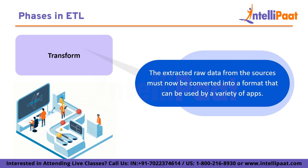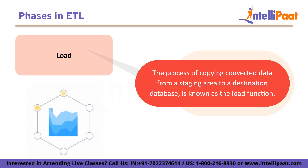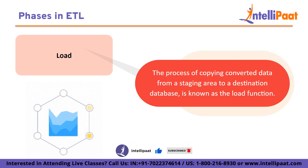Second is Transform. The extracted raw data from the sources must now be converted into a format that can be used by a variety of apps. This phase's objective is to prepare the data for practical use by cleaning, mapping and transforming it. It entails a variety of transformations that ensure the accuracy and security of the data. Normally, data is put into a staging database first and then loaded into the target data source. You can simply roll back if something does not go as planned. You can make audit reports for legal compliance here, or examine and resolve any data problems. Third is Load. The process of copying converted data from a staging area to a destination database is known as the Load function. The requirements of the application will determine how simple or complicated this technique is. Each of these procedures can be finished using custom code or ETL utilities.